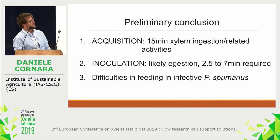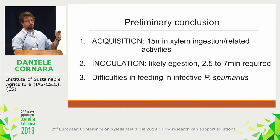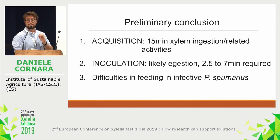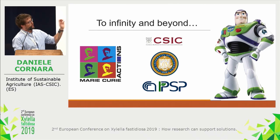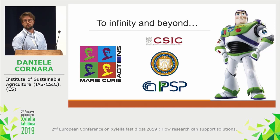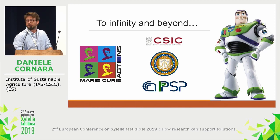The third interesting finding: Philaenus infected with Xylella behaves differently from a feeding behavior point of view. Is this true manipulation? Does Xylella manipulate its vector to increase transmission efficiency? We don't know. Our experiments opened many research questions that we will try to answer from January 2020. Our group at CSIC, with University of Berkeley and INRA CNR, received a Marie Curie program grant to explore this interaction deeply.